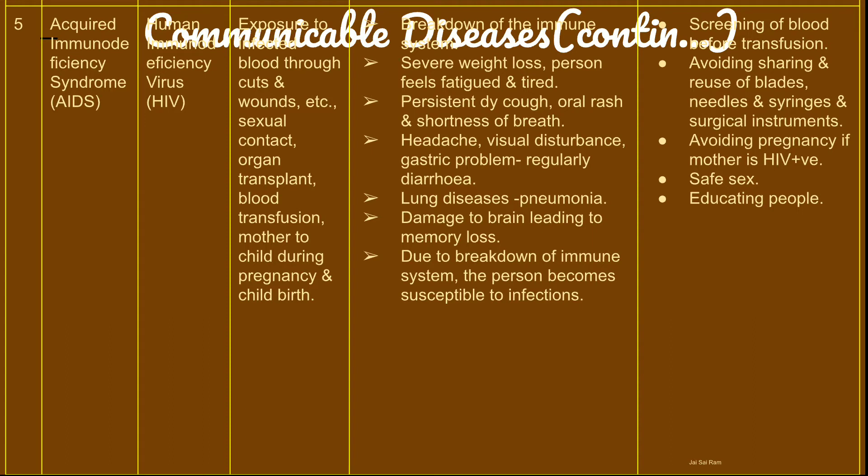A person can be infected through cuts or wounds, sexual contact, organ transplant, blood transfusion, or from mother to child during pregnancy and childbirth. HIV can be transferred from mother to child during pregnancy, leading to AIDS.